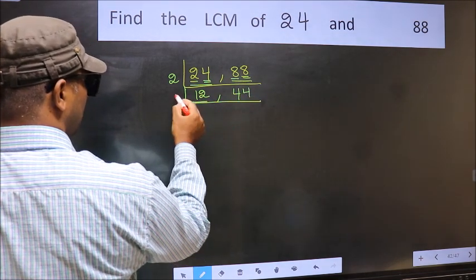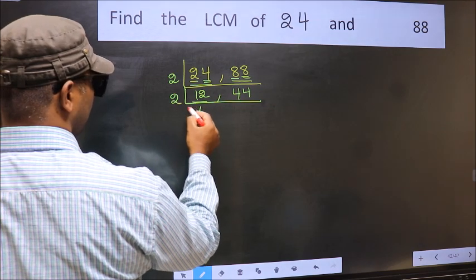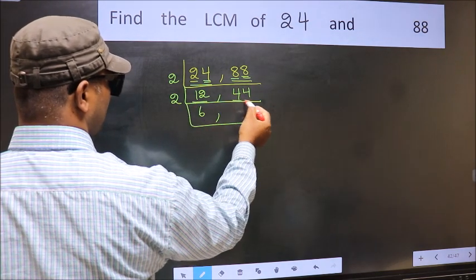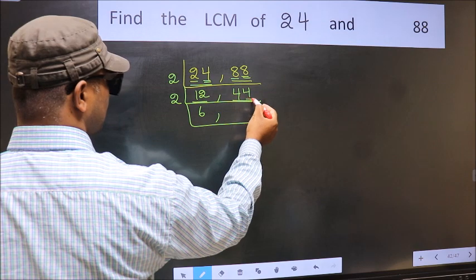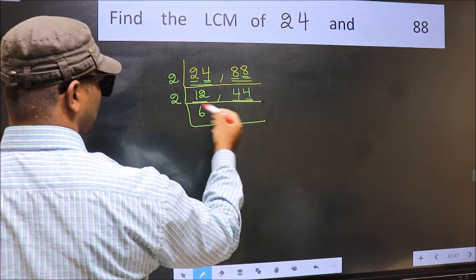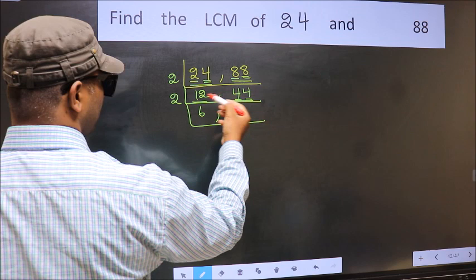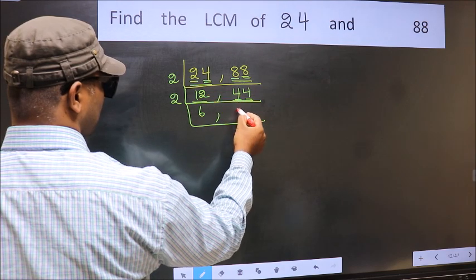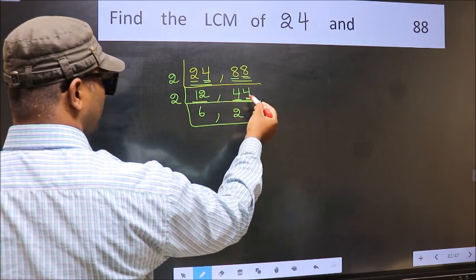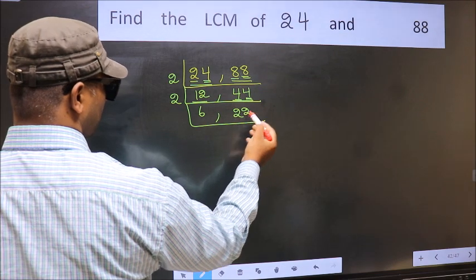Now here we have 12. 12 is 2 times 6, which gives 12. The other number 44 — last digit 4, so this is divisible by 2. First number 4: when do we get 4 in the 2 table? 2 times 2 is 4. The other number 4: 2 times 2 is 4.